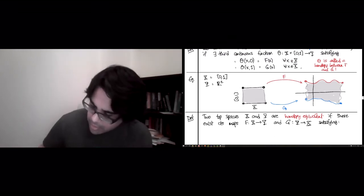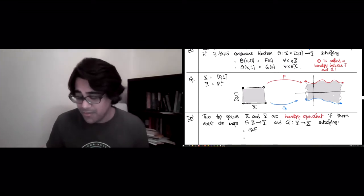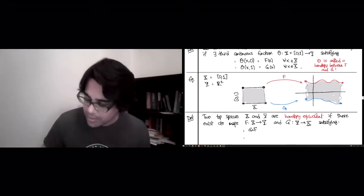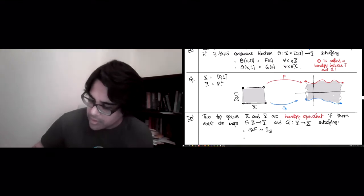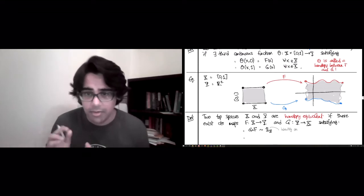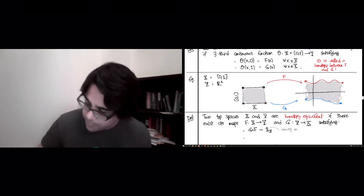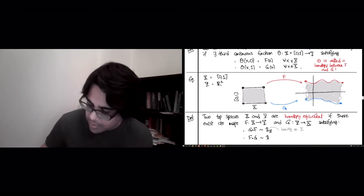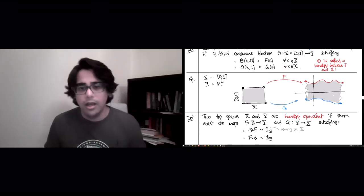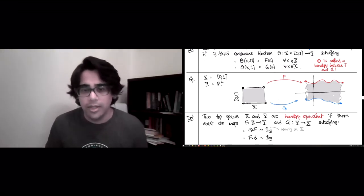The first one is that when you do first f and then g, so f is going to take you from X to Y, g is going to bring you back to X, this has to be homotopic to the identity map on X. So this is the identity which does nothing. It just sends every point in X to itself. And, again, no prizes for guessing, the second criterion, that's the other composite, has to be homotopic to the identity map on Y.